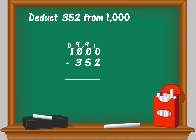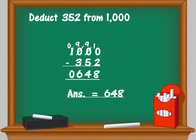Now in the units place you have 10 minus 2 which is 8. In the tens place, 9 minus 5 is 4. In the hundreds place, 9 minus 3 is 6. In the thousands place it is 0. The difference is 648.